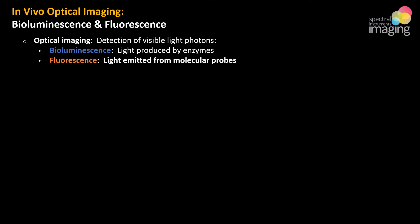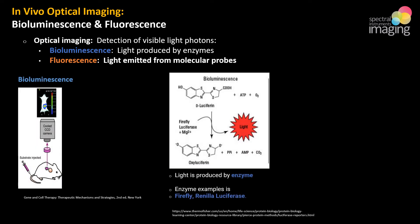There are two major types of optical imaging reporters: bioluminescent and fluorescent. In both instances, the system uses a light-tight box and a CCD camera to detect light. In vivo bioluminescent imaging typically utilizes luciferase, the enzyme that makes certain insects, jellyfish, and bacteria glow. The luciferase gene is incorporated into the cells; when active and in the presence of its substrate — typically an injected luciferin salt — it causes a reaction that emits light.